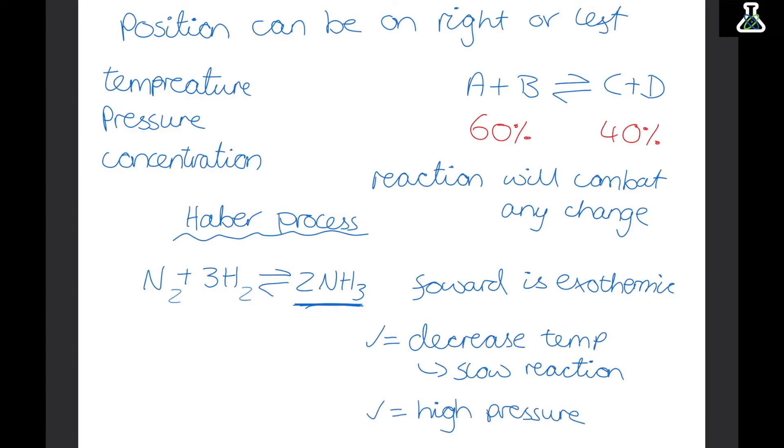Now we also want to have a higher pressure. And this is because in the forward direction has a low pressure. So if we add a higher pressure the reaction wants to combat this change so it leans toward the side with a low pressure. Now a random bit of information that you need to know about the Haber process is that it uses iron as a catalyst. So this means iron speeds up the reaction without being used.